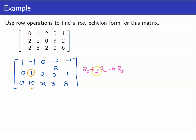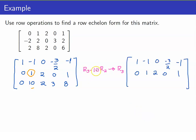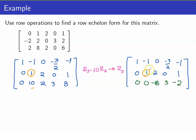What would this constant be? Since this is 10, we have to multiply this by negative 10. R3 minus 10R2: 0 minus 0 is still 0, 10 minus 10 is 0, 2 minus 20 is negative 18, 3 minus 0 is 3, and 8 minus 10 is negative 2. As you notice here, we are now done with our second pivot column — all the entries below it are now equal to 0.